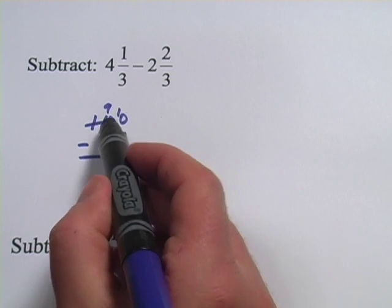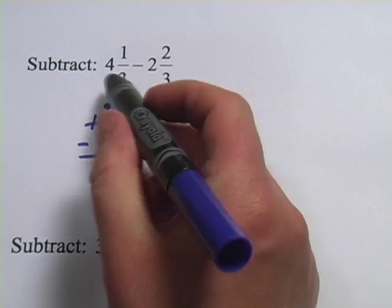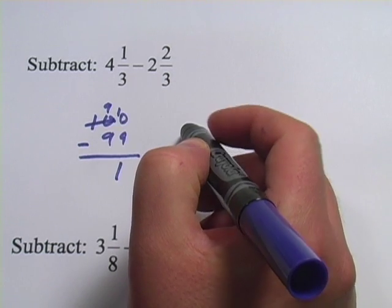So that borrowing and putting it over in this column is called regrouping. And we're going to do something similar with these subtraction problems with mixed numbers.